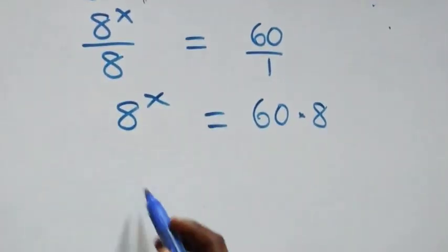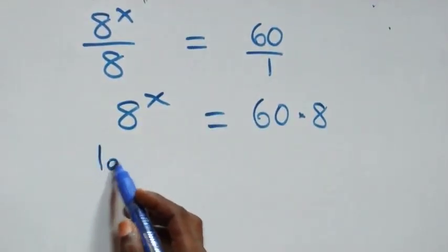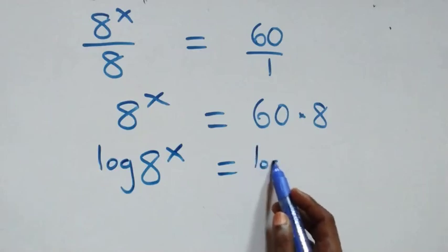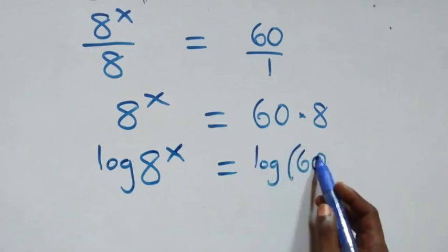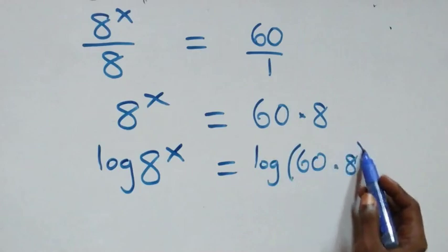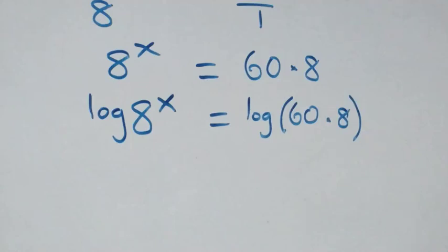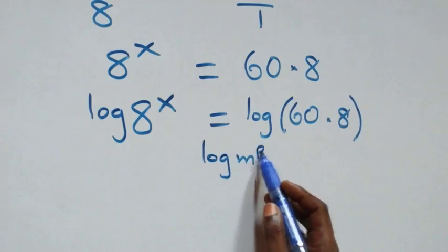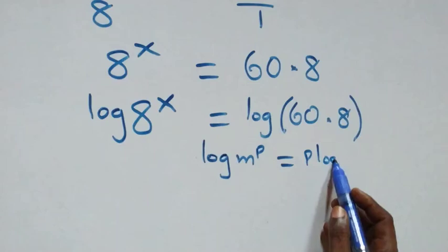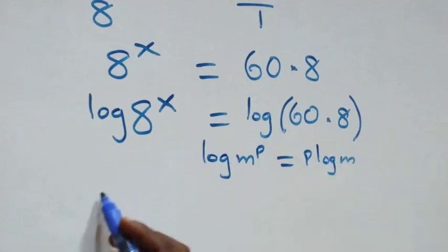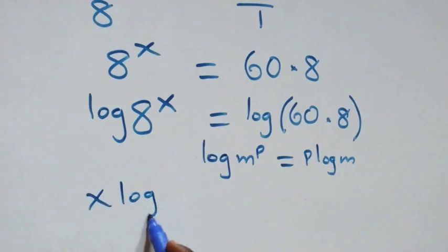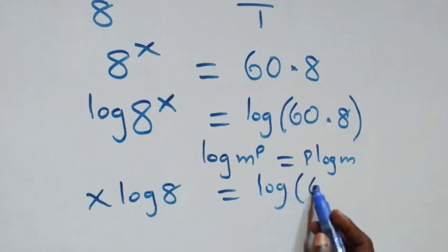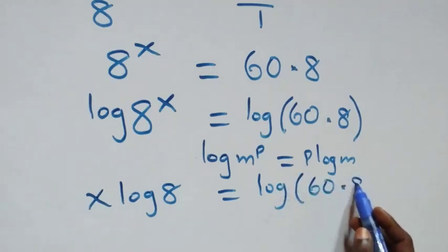From here we take the log on both sides: log of 8 raised to power x equals log of 60 times 8. We apply the power law of logarithms — when we have log m raised to power p, this is the same as p times log m — so this becomes x log 8 equals log(60 times 8).